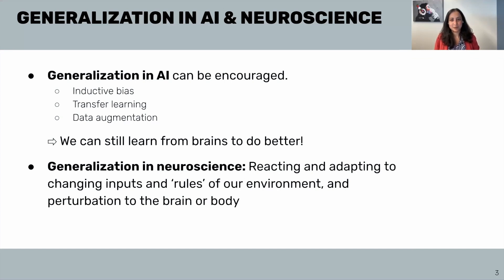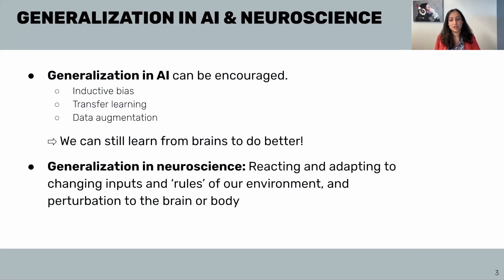And this is exactly what we are really good at. We react and adapt extremely quickly to changes in inputs and rules of the environment, as well as changes to the body and the brain. How do we understand this generalization and what helps us achieve it, so that we can better design artificial intelligence networks as well?